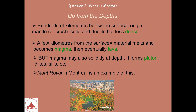Mount Royal in Montreal is an example of a pluton that stopped underground. It solidified and later a thick, thick layer of sediments was deposited on top. With time, the sedimentary rocks were removed — we call this erosion — and now we are able to observe the pluton which appears at the surface.